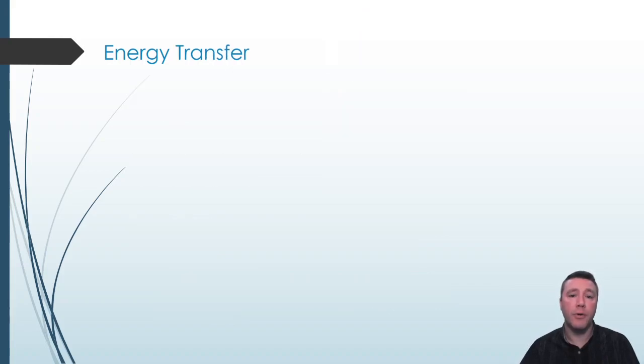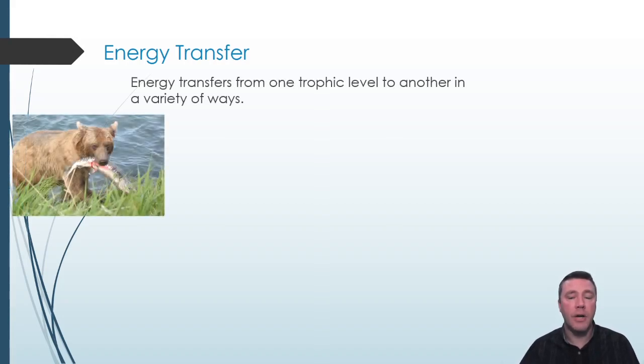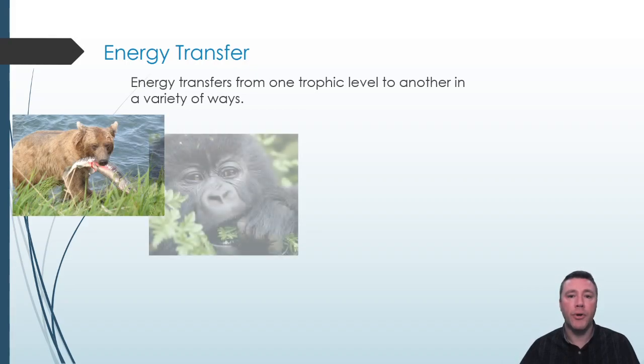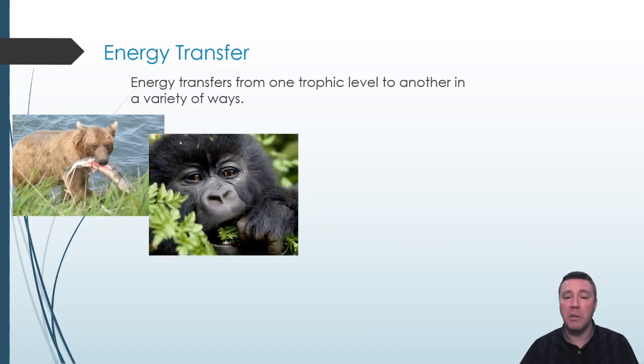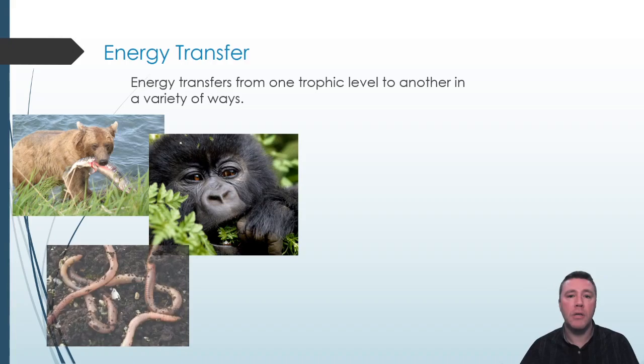Energy transfer, and matter too of course, occurs in a number of ways. It can be to a carnivore when an animal eats another animal. It can be to an herbivore when an animal eats a plant. It can be through the process of decomposition, as these earthworms return nutrients from decomposing organisms back to the soil.